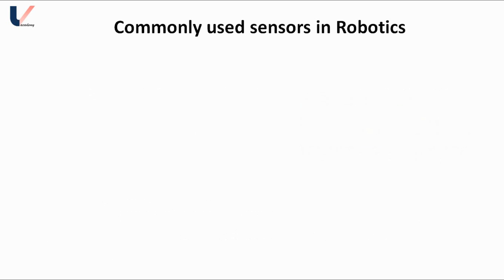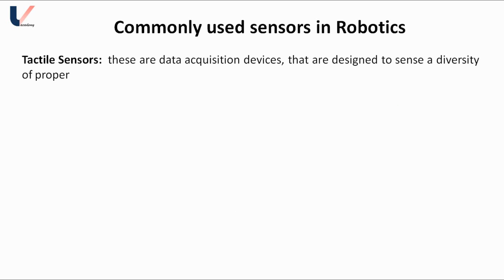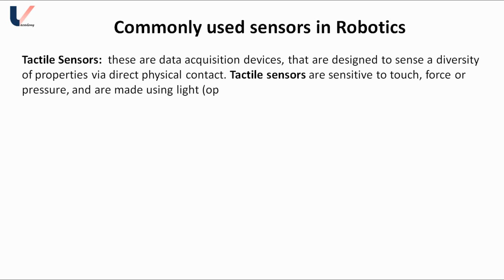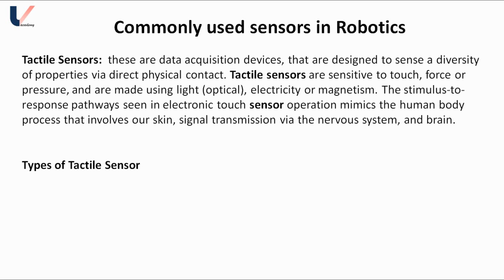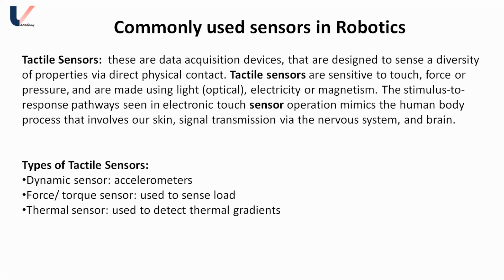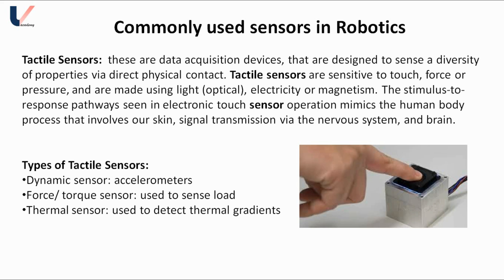Tactile sensors are basically contact sensors — they specify the contact between an object and the sensor. Basic contact sensors like bumper sensors give only 0 or 1 information, meaning no or yes for contact, with no detailed information. Tactile sensors are more advanced; they give detailed information about contact such as force, torque, angle, and temperature. Tactile sensors are sensitive to touch, force, or pressure and are made using light, electricity, or magnetism.